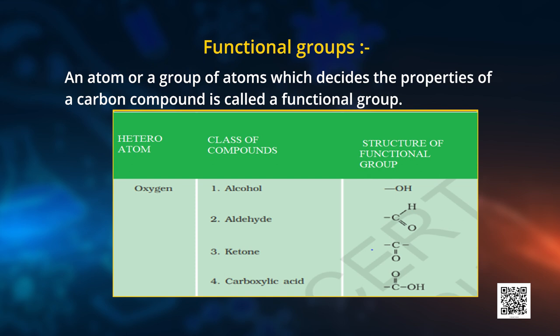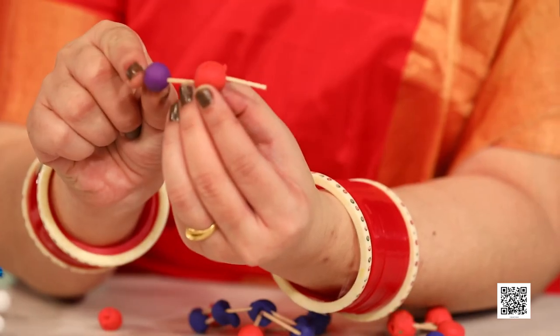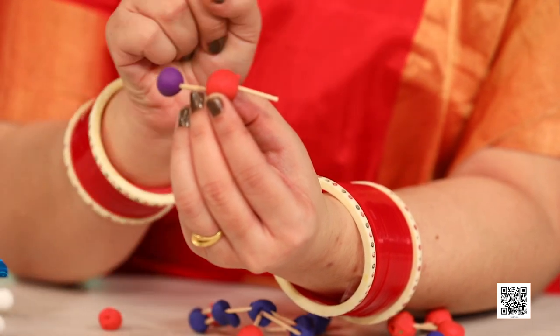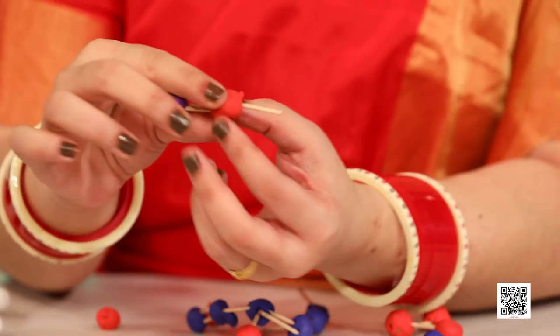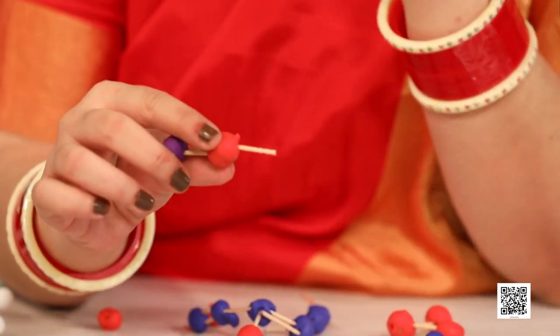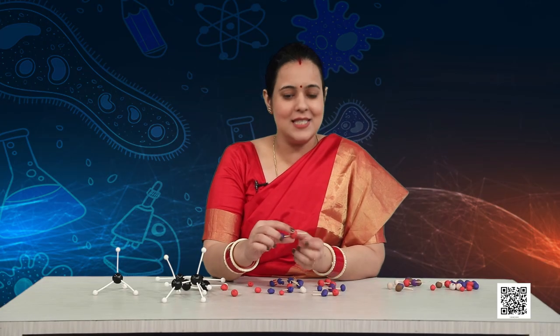The first functional group is alcohol. In alcohol, the presence of an OH group is mandatory. This red ball represents oxygen and this purple ball represents hydrogen. There is one bond between the O and H, and one valency of OH is free, which makes OH a terminal group.